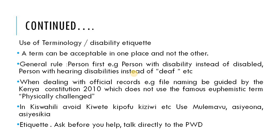Most of us speak the Kiswahili language, and when speaking it as our national language, avoid terminology like 'kiwete,' 'kipofu,' 'kiziwi,' because this puts people with disabilities in the same category as objects — it's like referring to persons with disabilities as people without life. Instead, use the 'ngeli ya mtu' class where we have 'mtu/watu.' Therefore, use 'mulemavu/walemavu,' then 'asieona,' 'asieskia,' etc., for the person who is visually or hearing disabled.